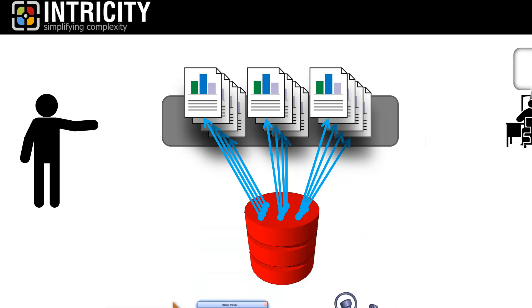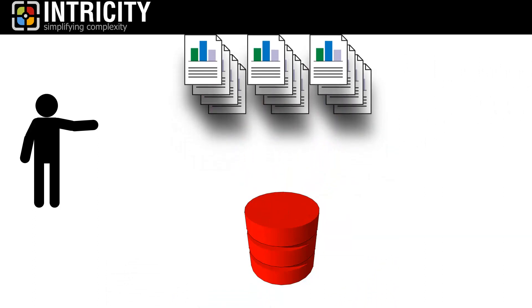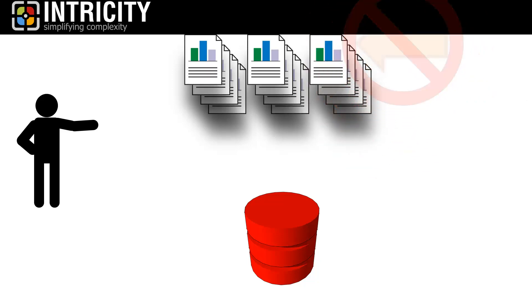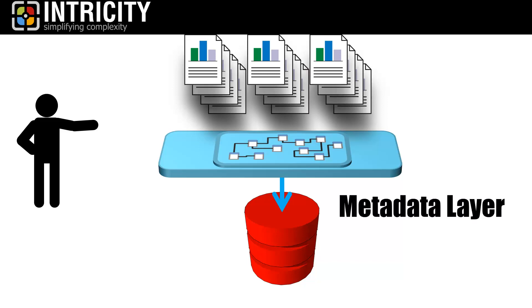However, business intelligence vendors, over time, have devised clever methods of getting around this issue. Instead of nesting the logic in the report template file, they came up with a virtual modeling layer that allowed organizations to centralize all of their logic in one place. This way, the reports generated from this layer would inherit all the logic from a single location. This layer is called a metadata layer. So, if changes need to be made, they could be done once in the metadata layer.